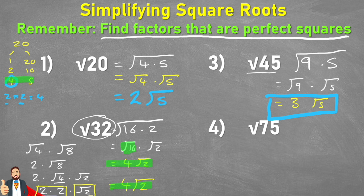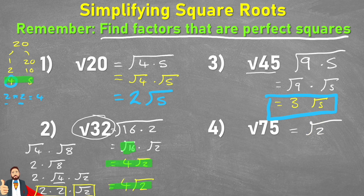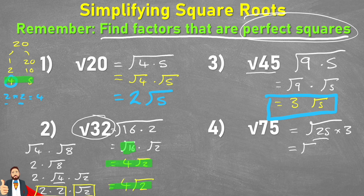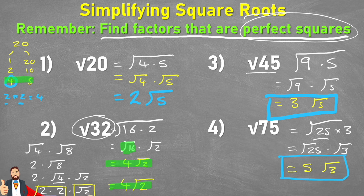Question 4, our last one: the square root of 75 can be broken down into the square root of 25 times 3, because 25 is a perfect square — 5 times 5 equals 25. Let's break it down further and say the square root of 25 multiplied by the square root of 3. We know the square root of 25 equals 5, so our final answer is 5 multiplied by the square root of 3.